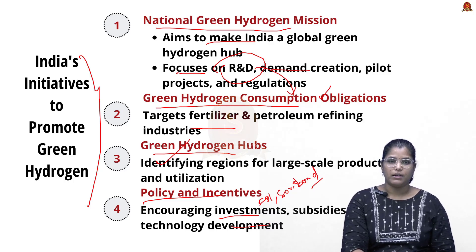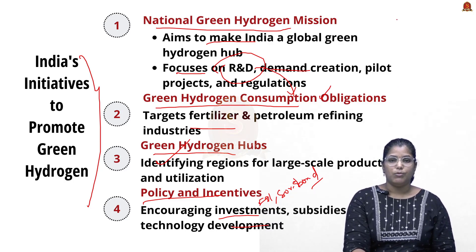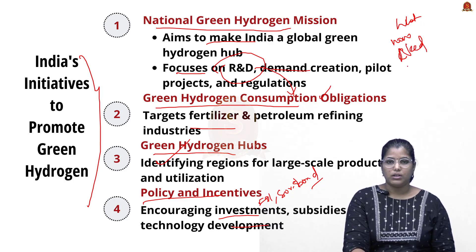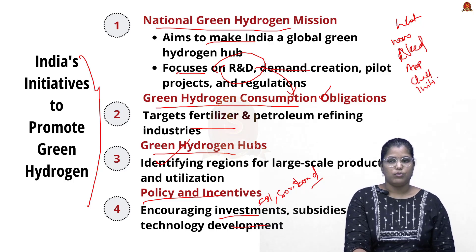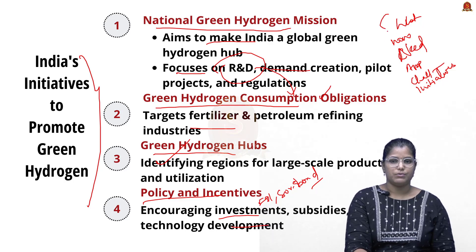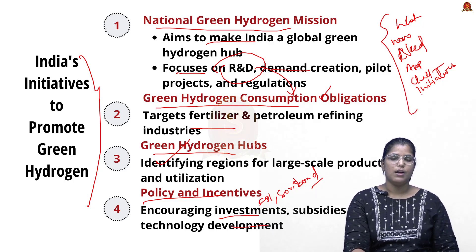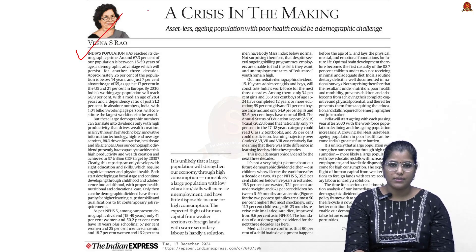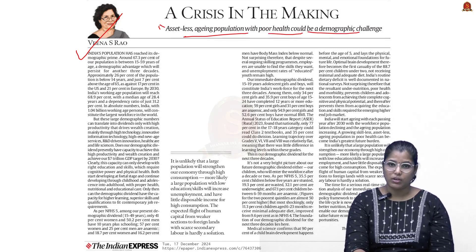To summarize the green hydrogen discussion: we covered what green hydrogen is, how it is produced, the reasons why we need it, its applications, challenges, and India's initiatives. Now let us move on to the next news article from the Indian Express, which talks entirely about demographic dividend, noting that an asset-less aging population with poor health could be a demographic challenge.